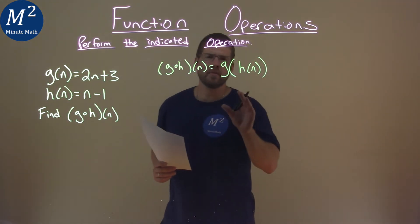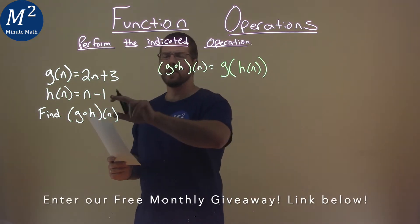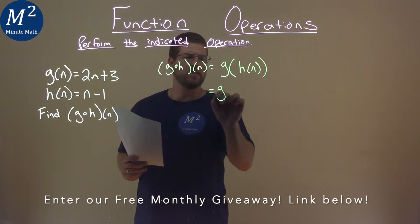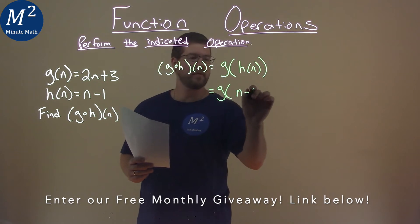So now we need to plug in h of n. H of n we know is n minus 1, so we have G of n minus 1.